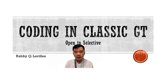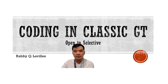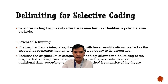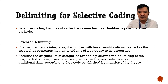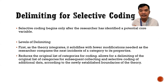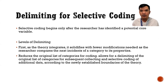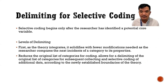We know that after open coding, the open coding will be done after we have identified the core category. At this point, we will start with selective coding. So what is selective coding as indicated here? Delimiting for selective coding. After deciding on the one potential core variable or core category that would somehow comprise the majority of the variation of your categories, we will now start with the selective coding.